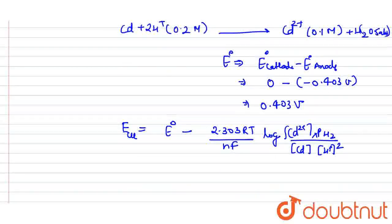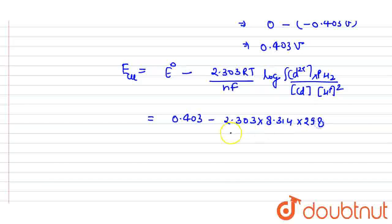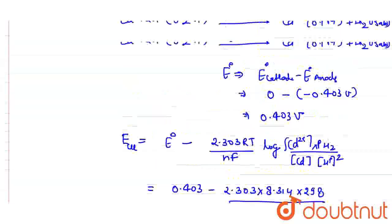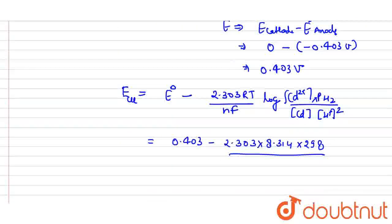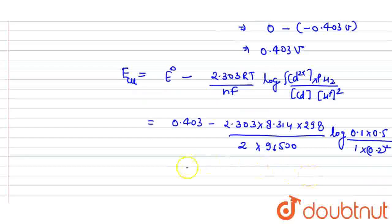Now we know all the values. Let's add value to this. E0 value is 0.403 minus 2.303. R value is 8.314. Temperature is 298 Kelvin. Now how is n value? We have seen the number of electrons. It was 2 electrons. F value is 96500. Log of cadmium is 0.1, it will be 0.5, it will be 1. Now it will be 0.2, but it will be square. We will solve it in simple calculation.